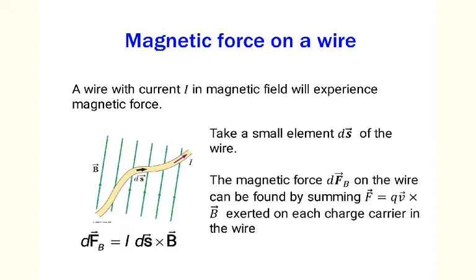Suppose now we place a wire with current I inside magnetic field. The wire will also experience magnetic force, because each moving charge carrier creating the current is deflected by the magnetic field. The total magnetic force on the wire generally depends on the shape of the wire. But suppose we take a small approximately linear element ds of the wire. The magnetic force dF_B on the wire element can be found by summing q times v cross B exerted on each charge carrier. Therefore, the magnetic force on the element ds is simply equal to I times ds cross B.